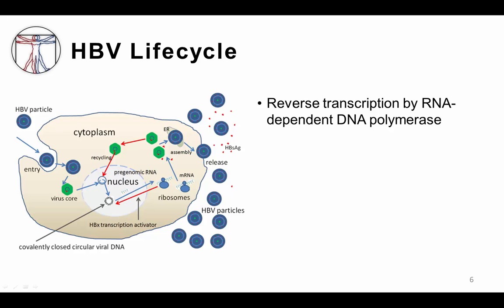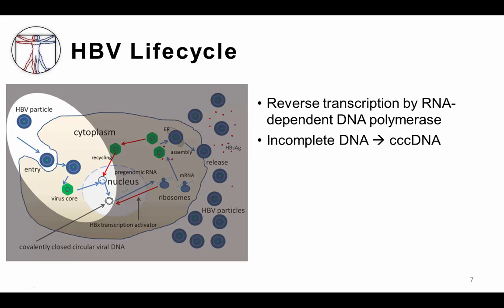Hepatitis B replicates its DNA genome through an RNA intermediate via reverse transcription, which is another unique feature. As such, it is classified as a pararetrovirus to differentiate it from conventional retroviruses like HIV, which contain an RNA genome. Upon entering a host cell, the viral double-stranded DNA, which is incomplete, undergoes repair forming what is called covalently closed circular DNA, or CCC DNA.